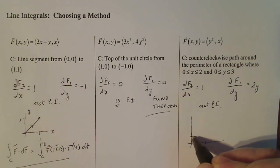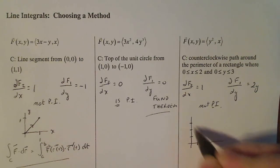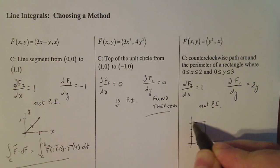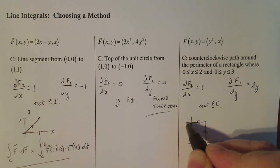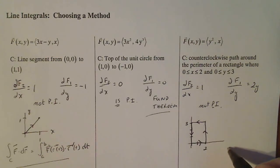So x goes from zero to two, y goes from zero to three. So I have created this rectangle that looks like this, I'm moving counterclockwise around the edge.